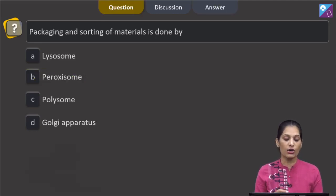Packaging and sorting of materials is done by a lysosome, peroxisome, polysome, or Golgi apparatus. Packaging and sorting of materials is done by the Golgi apparatus.